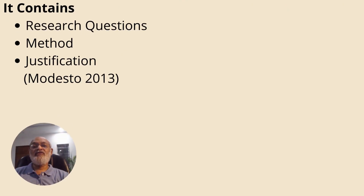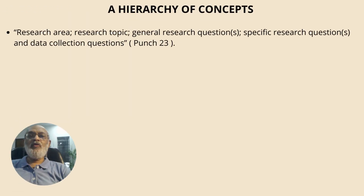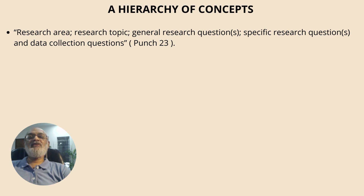Just to re-emphasize, the key elements are the hypothesis or research questions, a method, and a strong justification. A research proposal has a hierarchy of concepts: research area, research topic, general research question, specific research question, and data collection questions.